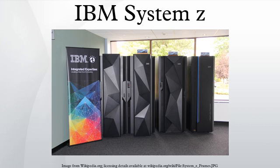IBM System Z is a family name used by IBM for all of its mainframe computers. In 2000, IBM renamed the existing System/390 to IBM eServer Z series, with the E depicted in IBM's red trademarked symbol. But because no specific machine names were changed for System/390, the Z series in common use refers only to the Z900 and Z990 generations of mainframes.